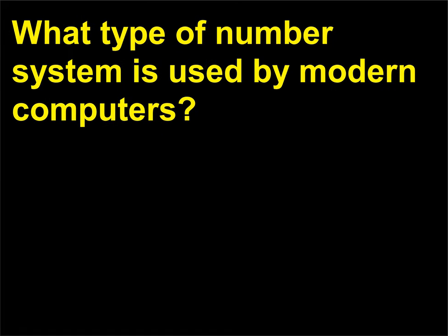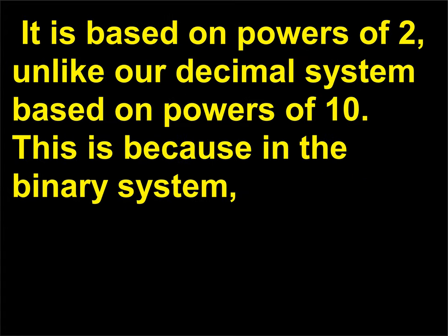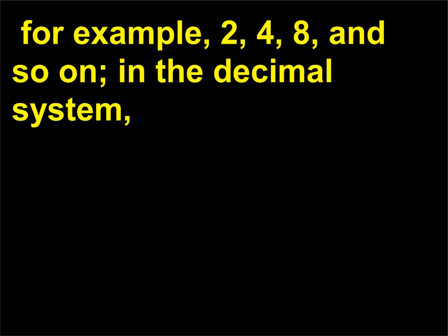What type of number system is used by modern computers? Modern computers use the binary system, a system that represents information using sequences of zeros and ones. It is based on powers of 2, unlike our decimal system based on powers of 10. This is because in the binary system, another number place is added every time another power of 2 is reached — for example, 2, 4, 8, and so on — in the decimal system.